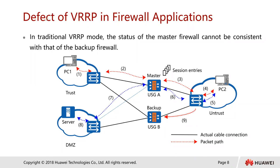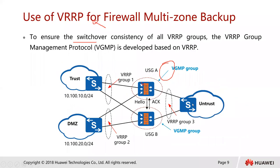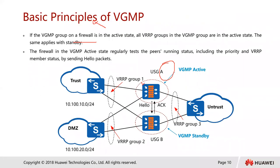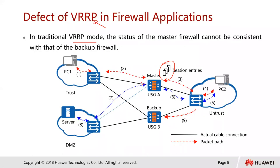The disadvantage of VRRP for firewalls is that in traditional VRRP mode the status of the master firewall cannot be consistent with that of the backup firewall. When a packet comes through and a session is created, subsequent packets are processed accordingly. But if the firewall goes off and the backup firewall is used, it won't be in the same status as the master firewall, and the packet will be discarded.